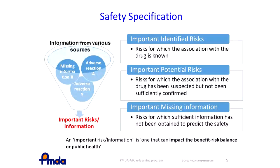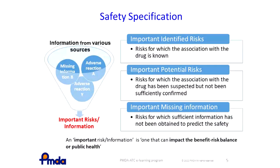Missing information is the risk for which sufficient information to predict safety has not been obtained in the clinical trials, because of limited data such as eligibility criteria or enrollment, insufficient time to confirm such risks, etc. These risks are anticipated to become conceivable in the real world.